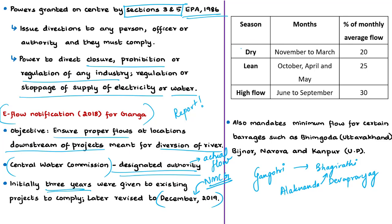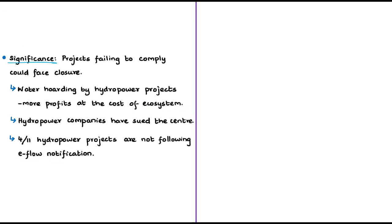Based on the notification, for the upper stretch of river Ganga — from its origin in the glaciers till Haridwar — a 20% monthly average flow is mandated between November and March, the dry season. This percentage is calculated with respect to the flow of the preceding 10 days. For the lean season, that is October, April, and May, 25% flow is mandated. For the monsoon months of June to September, 30% monthly average flow is mandated. Additionally, the e-flow notification mentions minimum flows during monsoon and non-monsoon periods at a few barrages such as at Bhimgoda in Uttarakhand, Bijnor or Narora, and Kanpur.